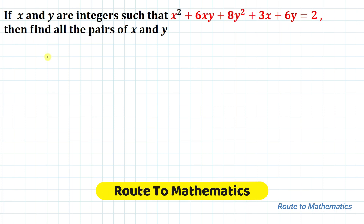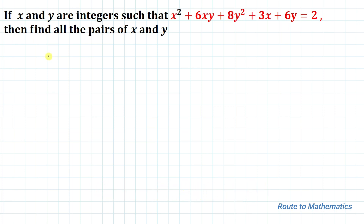Hello everyone, welcome to Root to Mathematics. In this video we are going to solve an interesting question. The given question is: if x and y are integers such that x² + 6xy + 8y² + 3x + 6y = 2, then find all the pairs of x and y.